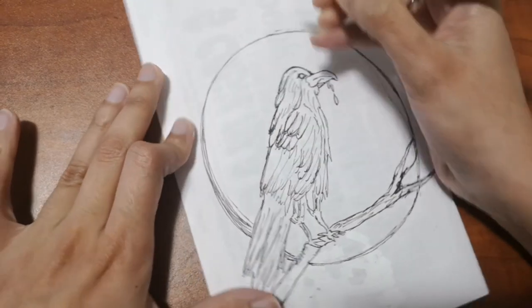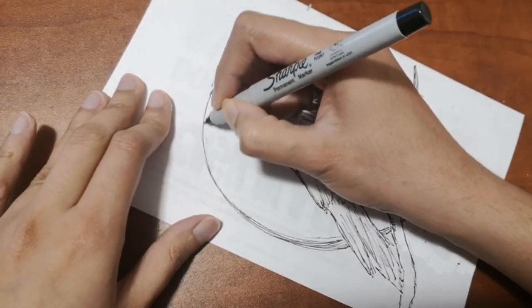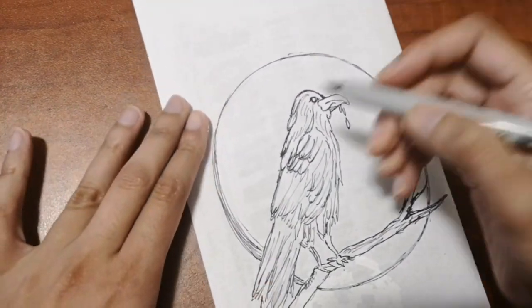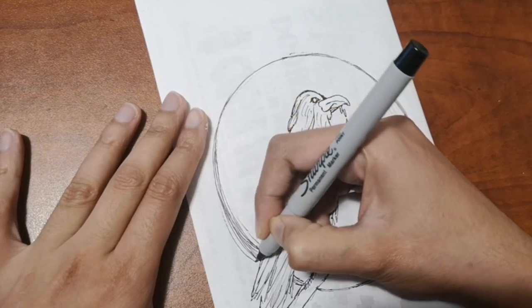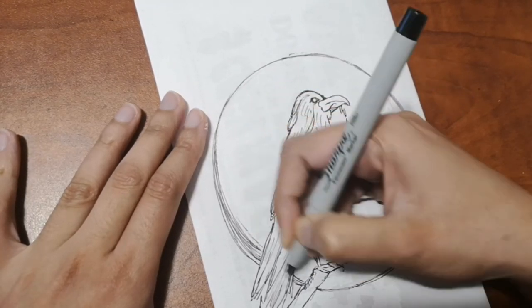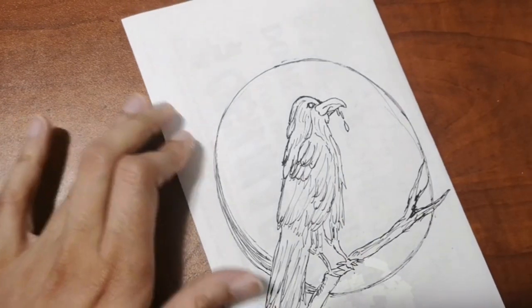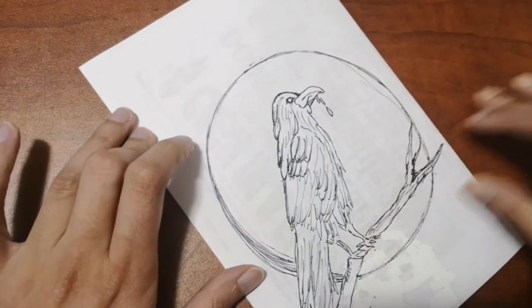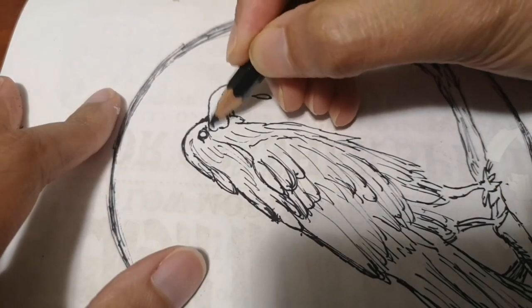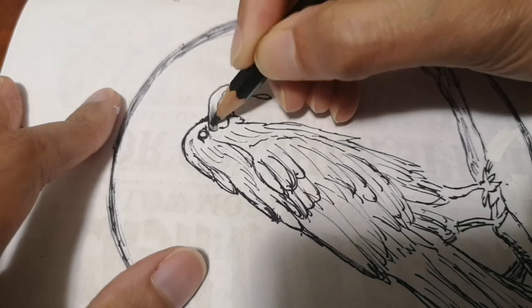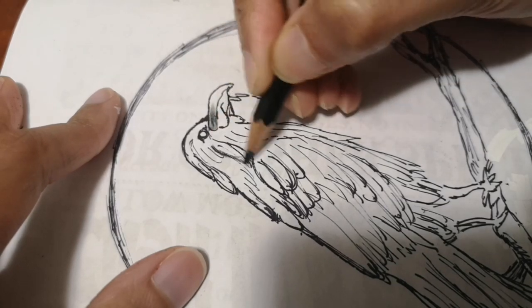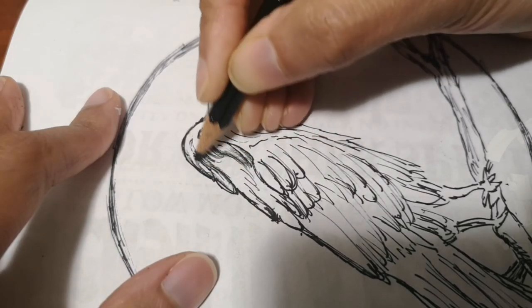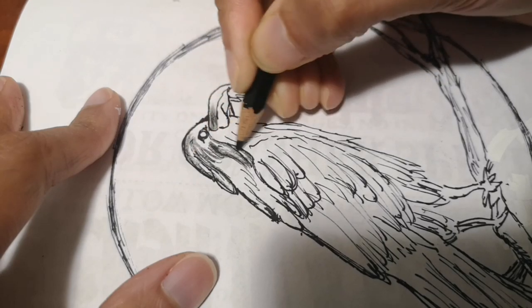You see here that I'm freehanding the moon. You can always use something round to make sure that you get a perfect round moon behind the crow. You can use a lid of some sort or anything really. Because I was just drawing it by hand, I'm just making sure it looks circular. Now we're going to go into coloring. We're going to start with black for the crow and build from there. I'm going to start by going over the lines with a darker strike of black.